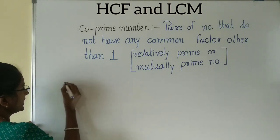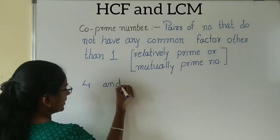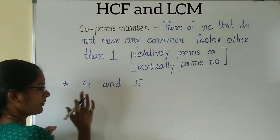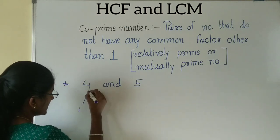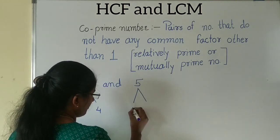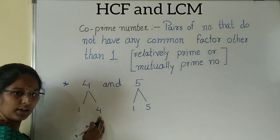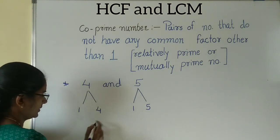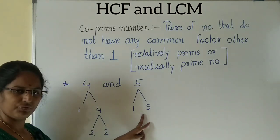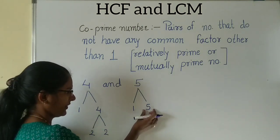Let me show you an example. First, 4 and 5. Find the factor of 4: 1 times 4 is 4, and 2 times 2 is 4. For 5: 1 times 5 is 5. We can't divide 5 by any other numbers, so we can't get any other factor of 5.